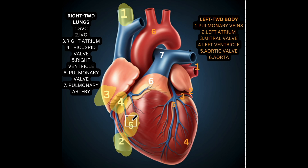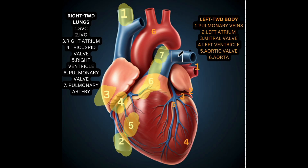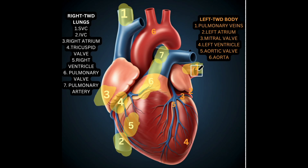The right ventricle will then pump blood through the pulmonary valve, which is right here — another valve to prevent backflow — and into the pulmonary artery. The pulmonary artery is one of the few arteries that will actually pump deoxygenated blood. That blood will be pumped to the lungs where it will get oxygenated, and then it'll enter the pulmonary veins, which are one of the few veins that will carry oxygenated blood toward the heart from the lungs.